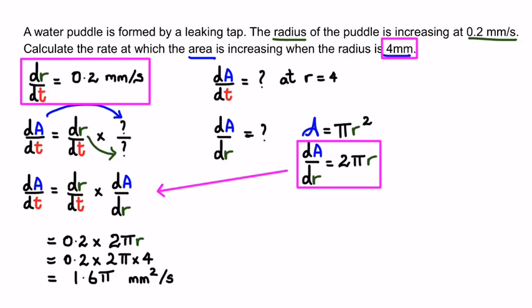In this question we were given a rate and asked to find a different rate. The majority of these questions work like this — you're given a rate, you use a formula that you differentiate, and then you put it all back into the chain rule equation. In every situation you have a known rate and an equation that you differentiate and combine.